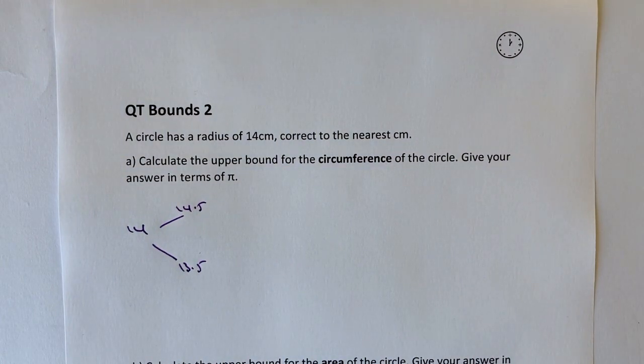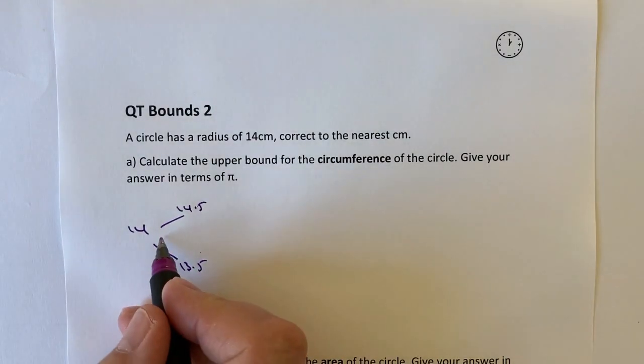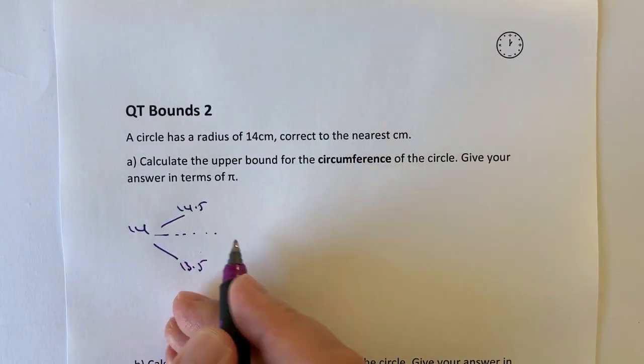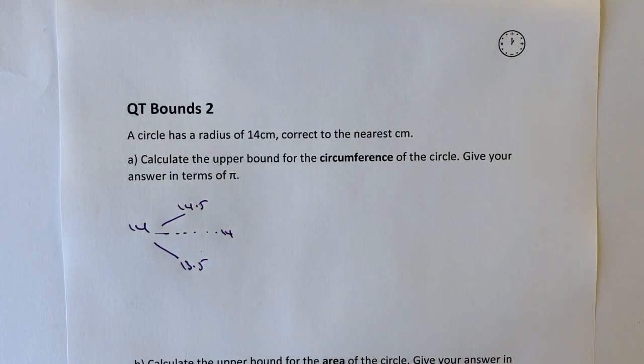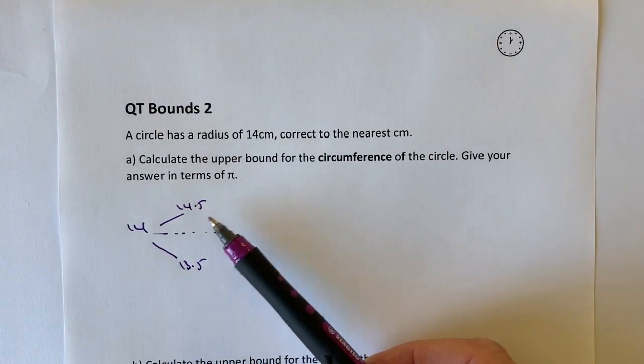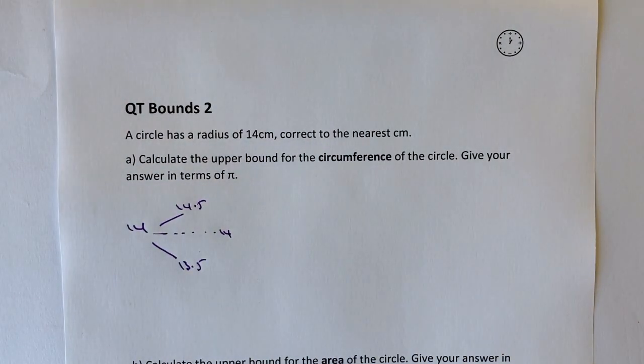So be careful, we're not really talking about rounding numbers. Effectively bounds are kind of tolerances. We're looking at the ideal being 14, but this is 0.5 lower and this is 0.5 higher.